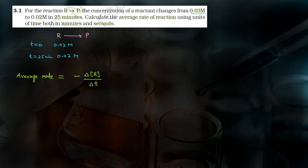Because the concentration of the reactant decreases with respect to time, we take it with a minus sign. So the average rate equals minus delta R divided by delta T. If we simplify this further: minus, delta R is final minus initial, so that is R2 minus R1, divided by delta T which is T2 minus T1 — final time minus initial time.